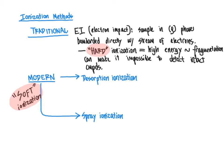In these modern modes, we can also add additional steps to take the intact molecule and systematically fragment it, gaining information about both the molecular weight from the complete ion, as well as information about individual parts, pieces, and functional groups from the fragments we can generate.